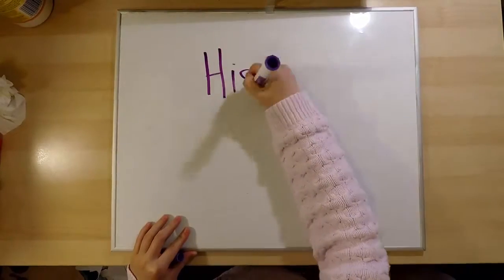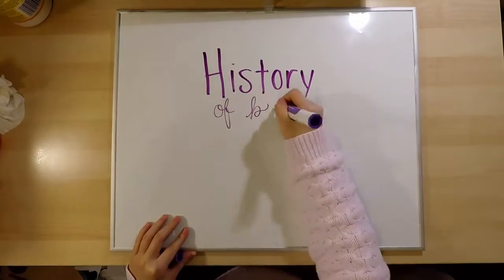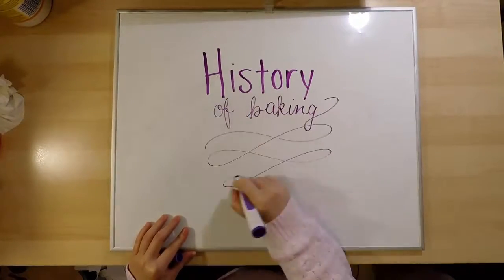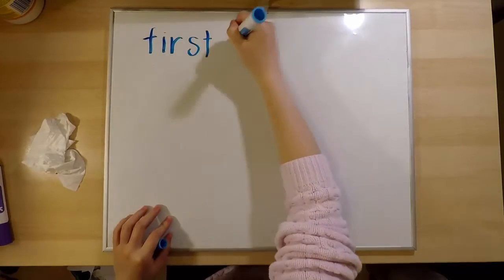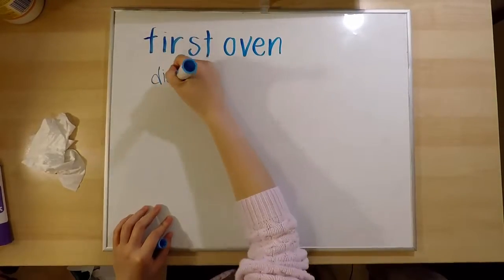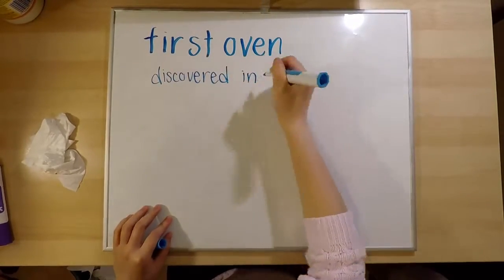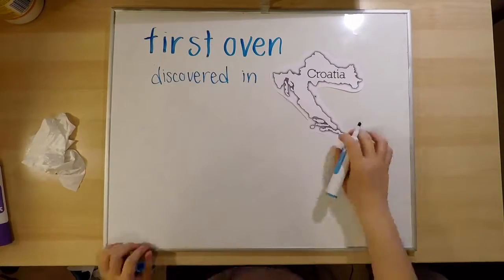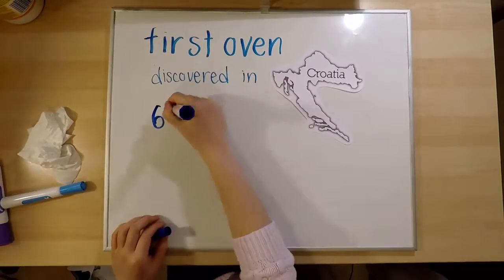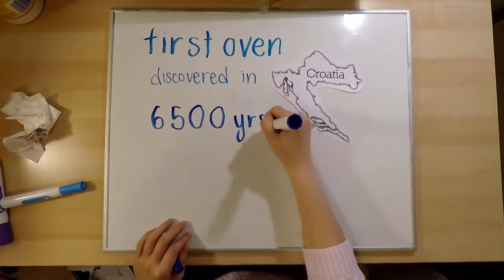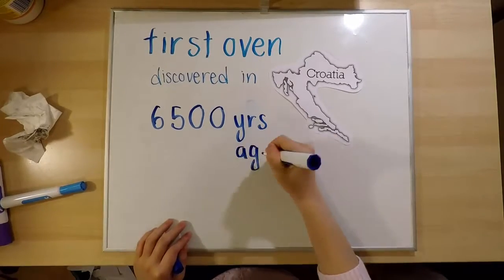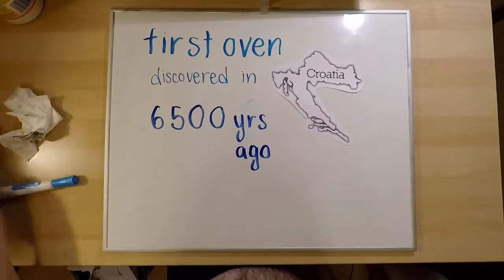But before I do that, here's a brief history on baking. Let's take a historical stroll on baking. The first oven was discovered in Croatia about 6,500 years ago, so baking has quite a history.